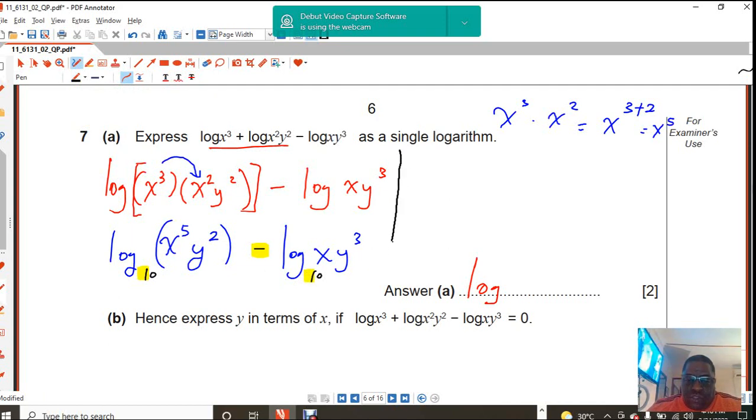We divide the numbers. So that becomes log, and then I have got this x to the power of 5, y² upon xy³. This has to be divided with each other.